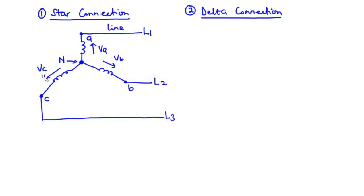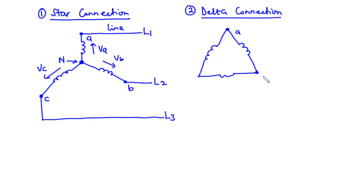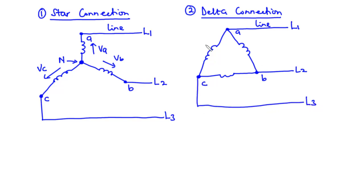For the delta connection, the windings are connected end-to-end and there is no neutral point. We have terminals A, B, and C, with the three windings connected end-to-end, and we have line one, line two, and line three. In a delta network there is no neutral point since the three windings are connected end-to-end, and the phase voltages are VA, VB, and VC.